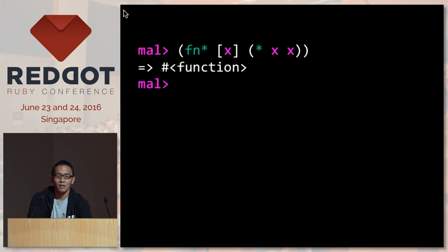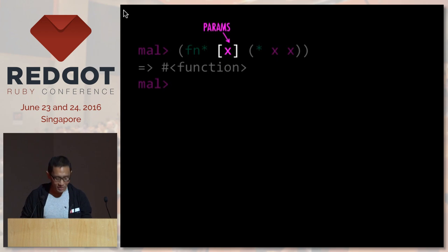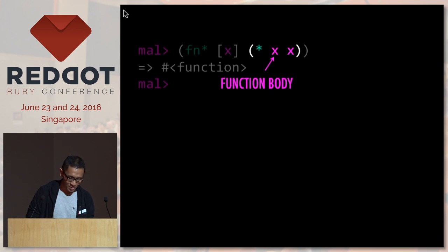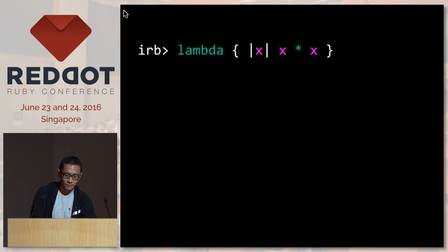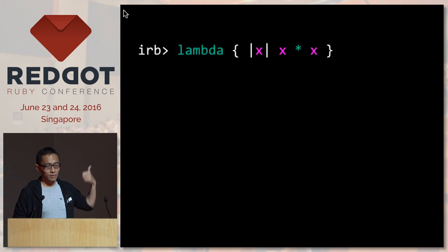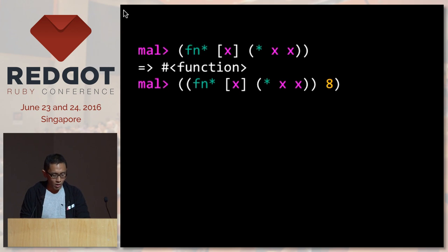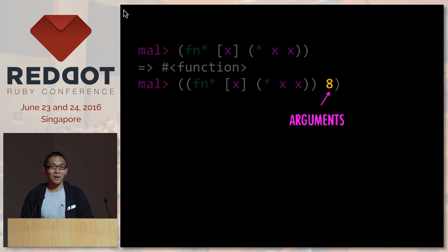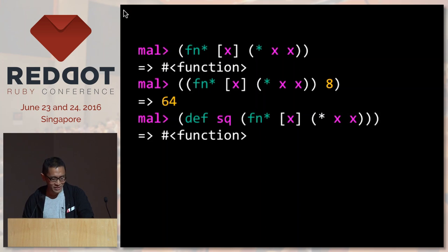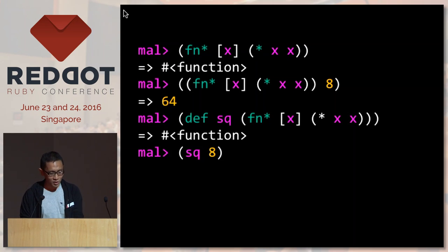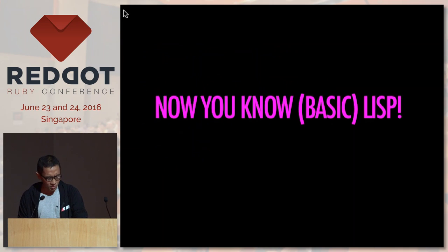This is how we define a function in MAL. We use fn* in our expression, followed by the list of parameters enclosed in square brackets, followed by the function body. This function multiplies its parameter by itself — similar to how we use lambda in Ruby. To call it, we enclose the function and parameters in parentheses: function in first position, followed by arguments — giving us 64. To give it a name, use def followed by the name — I'm naming it sq, short for square — and call it the same way.